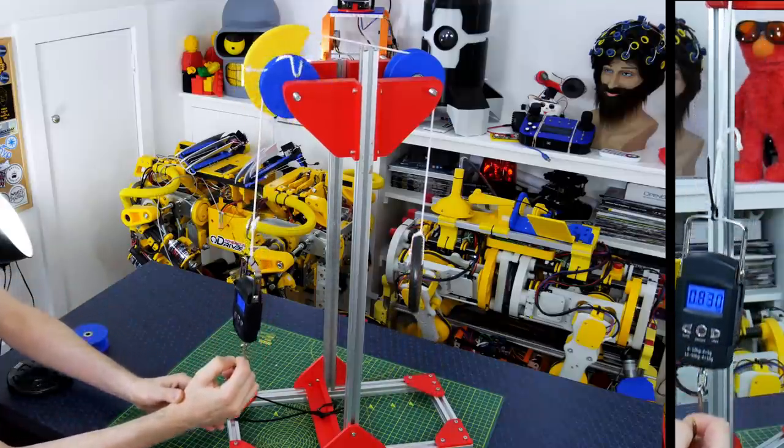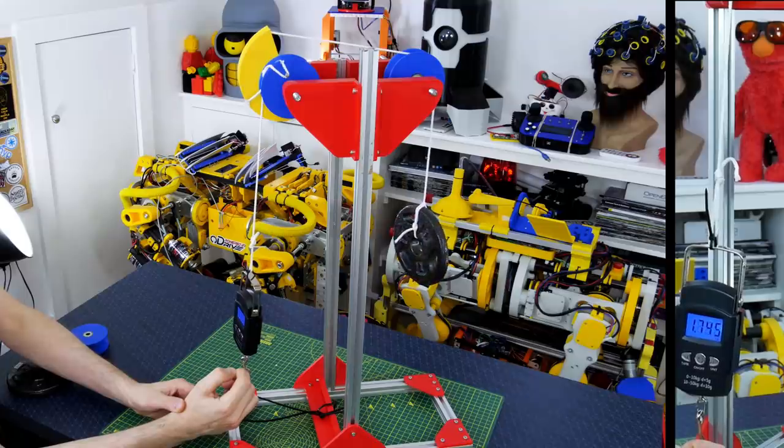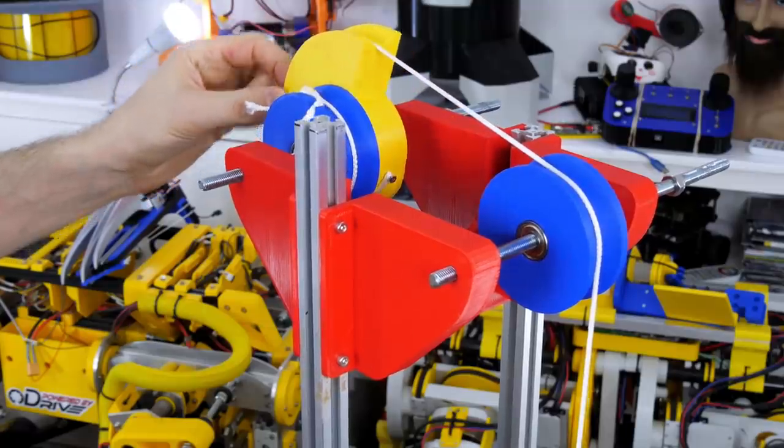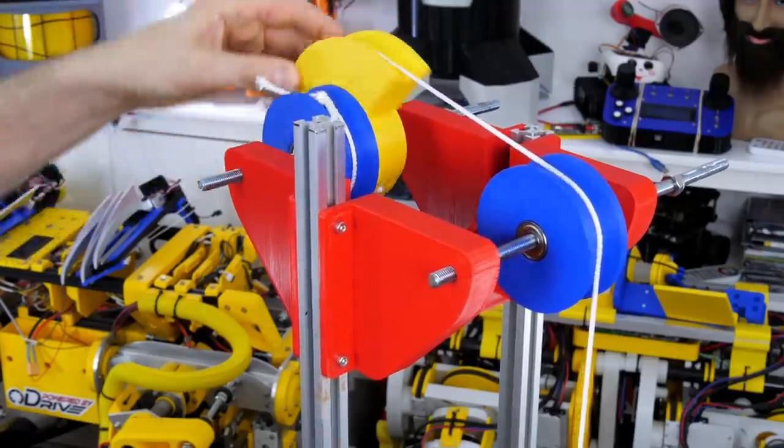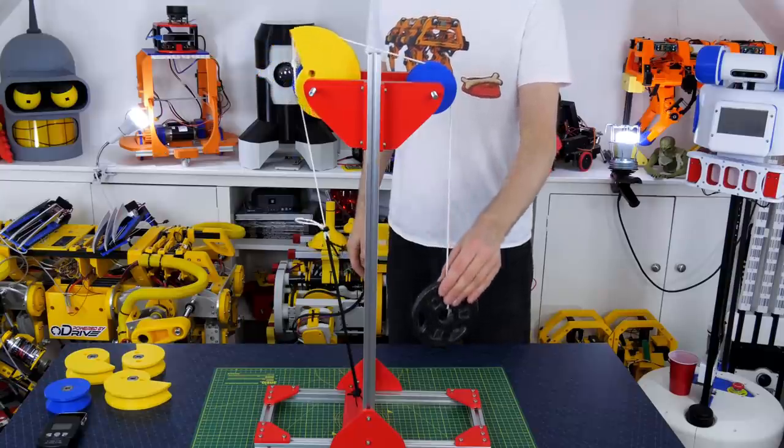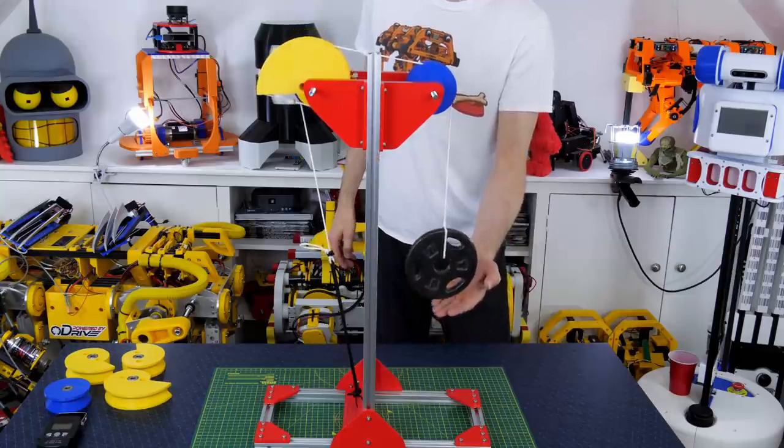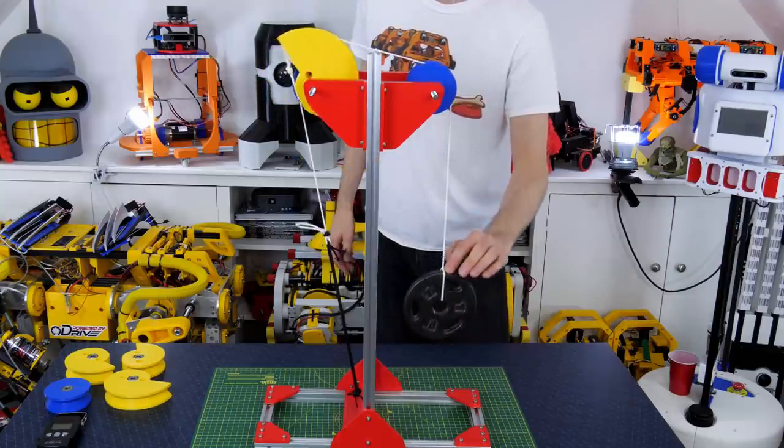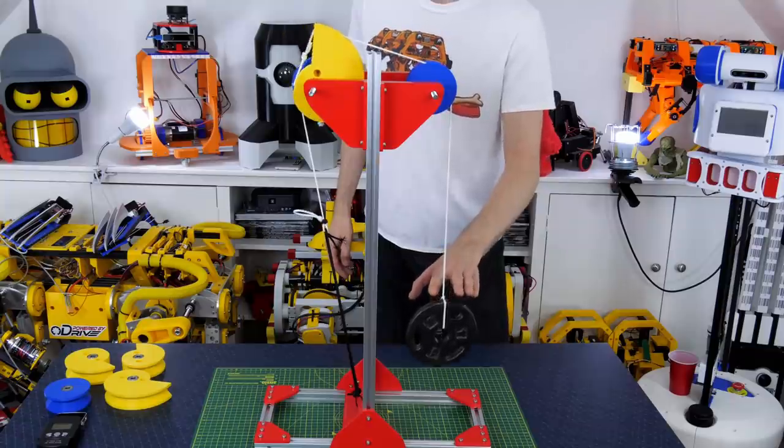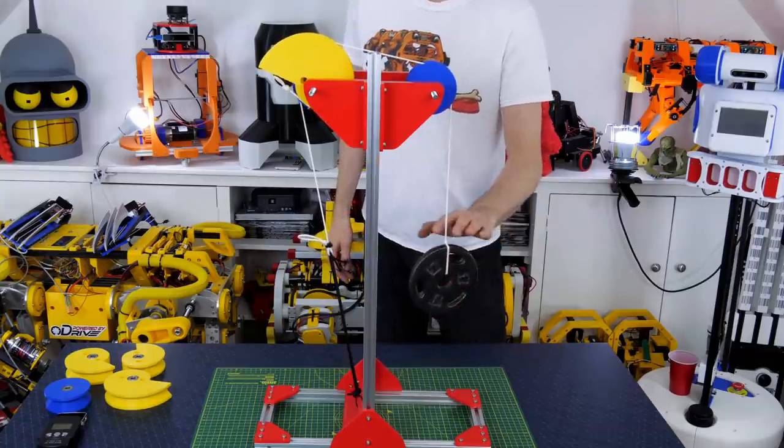The bungee cord is the other way round though, so it exerts more force when it's stretched and less when it's not, and we need the cam to counter this, so we need to turn the cam around. Now that the cam is the other way around, we can see that when the bungee is stretched, the larger part of the cam is at the top, and when the bungee isn't stretched as much, the smaller part of the cam rotates at the top, which means less force is required to lift the weight.